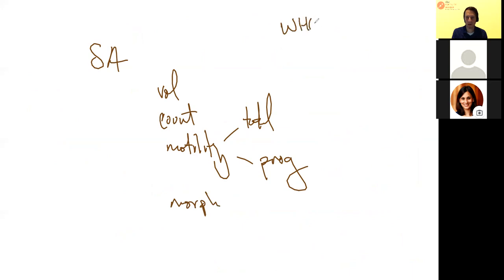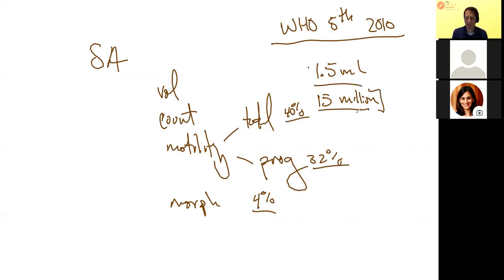We currently use the WHO fifth edition standard from 2010. The reference ranges: we like the volume to be more than 1.5 mLs. If it's less, that suggests there might be an obstruction. We want the concentration or count to be greater than 15 million, the total motility to be about 40%, progressive motility about 32%, and the morphology we want at least 4% of the sperm to be normal.